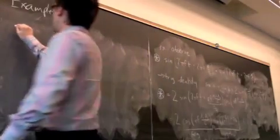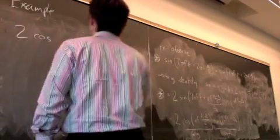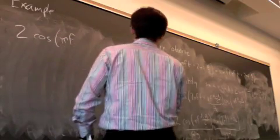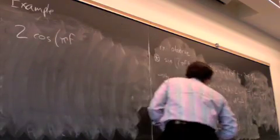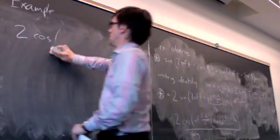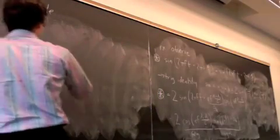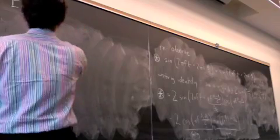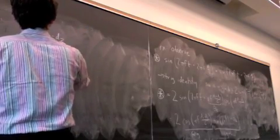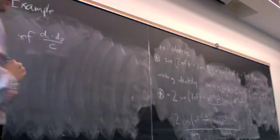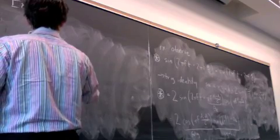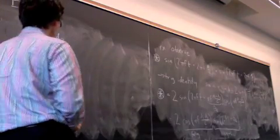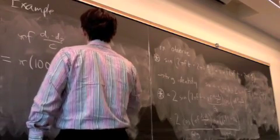So what do I have? I have 2 cos πf (d1 minus d2) over c. I'm just going to leave it like that and figure out what this internal term is. So we have πf (d1 minus d2) over c is equal to 100 megahertz. D1 minus d2 is 1.5 meters. Divide by the speed of light, which is 3 times 10 to the 8.